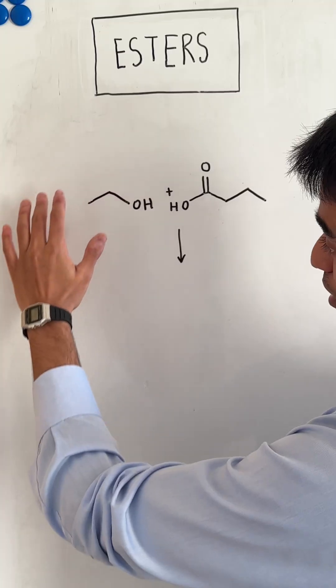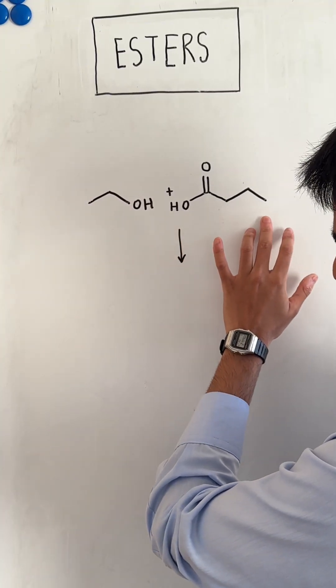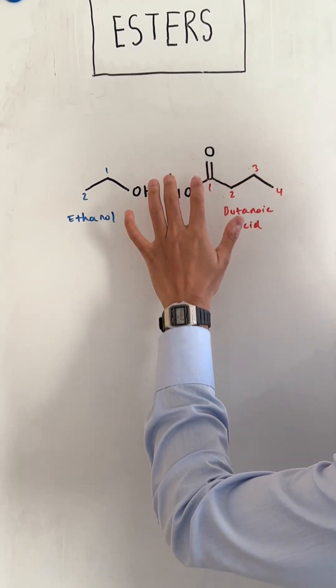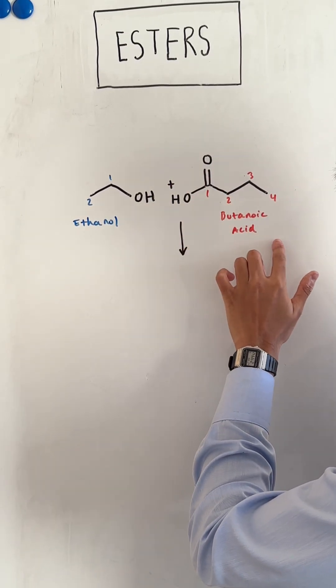Esters are made when alcohols react with carboxylic acids. This alcohol has two carbons, so it's ethanol. This carboxylic acid has four carbons, so it's butanoic acid.